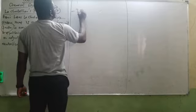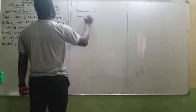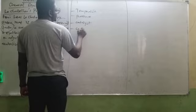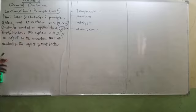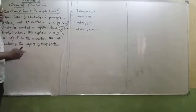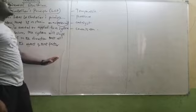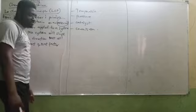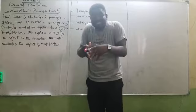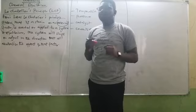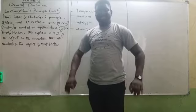The external factors include temperature, pressure, catalyst, and concentration. These factors can affect a system in equilibrium — one in which the rate of forward reaction equals the rate of backward reaction. Take note: reaction does not stop at equilibrium. It means that at that particular point there is a balance.